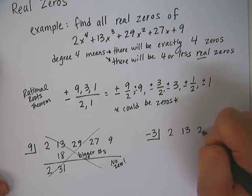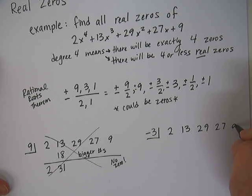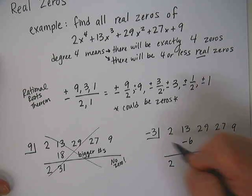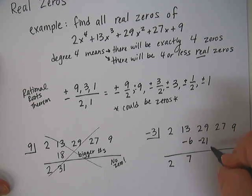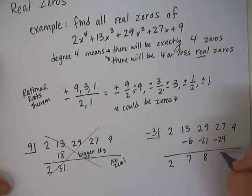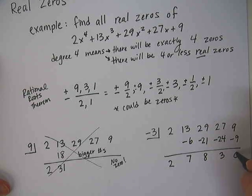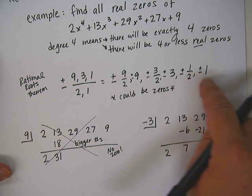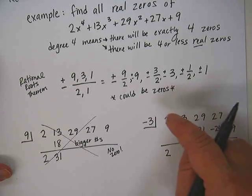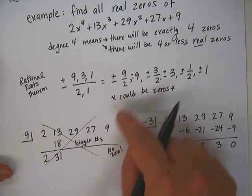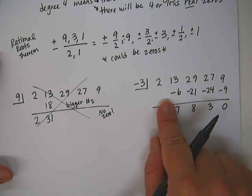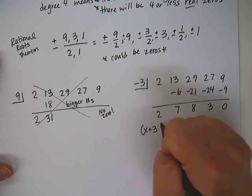So let's start trying some negatives instead. I really didn't like working with 9, it was too big. Let's go a little bit smaller, like a negative 3 perhaps. 2, 13, 29, 27, 9. Bring down the 2, 2 times negative 3 is negative 6, 13 minus 6 is 7, 7 times negative 3 is negative 21, 29 minus 21 is 8, 8 times negative 3 is negative 24, 27 minus 24 is 3, 3 times negative 3 is negative 9. Guess what? We found it. We found one of the possible 4 zeros. So that means it's possible that 4 of these would work. We just finally found one of the 12 that worked. And in fact, by doing this problem we figured out that we really only had 6 that we had to try, because the positive ones weren't going to work.